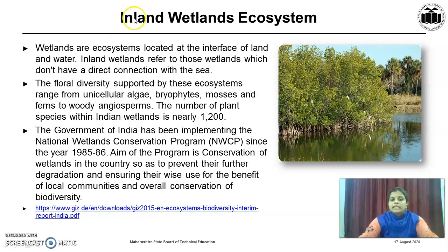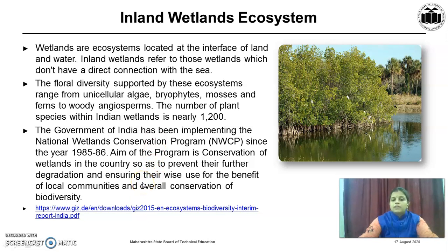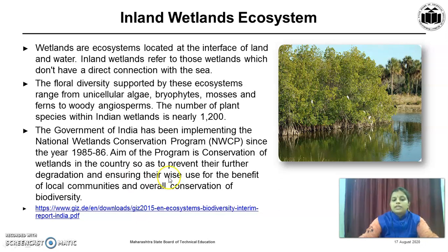The second major type of ecosystem is the Inland Wetland Ecosystem. Wetlands are ecosystems located at the interface of land and water. Inland wetlands are those that don't have a direct connection with the sea. The floral diversity supported by these ecosystems ranges from unicellular algae, bryophytes, mosses and ferns to woody angiosperms. The number of plant species within Indian wetlands is nearly 1,200. The Government of India has been implementing the National Wetland Conservation Program (NWCP) since 1985–86, aimed at conservation of wetlands to prevent further degradation and ensure wise use for the benefit of local communities and overall biodiversity conservation.